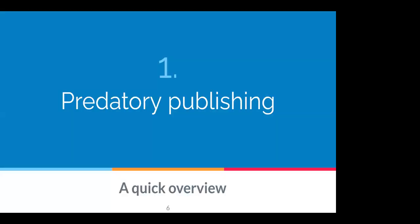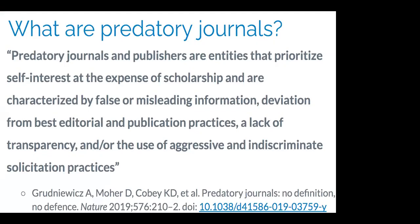A quick overview of predatory publishing — what does this mean? This definition comes from a comment piece published in the journal Nature in 2019 from an interdisciplinary research group. Predatory publishing doesn't just affect libraries or any specific discipline; it affects researchers in pretty much any discipline publishing article-based scholarship. Predatory journals and publishers are entities that prioritize self-interest at the expense of scholarship, characterized by false or misleading information, deviation from best editorial and publication practices, a lack of transparency, and the use of aggressive and indiscriminate solicitation practices.